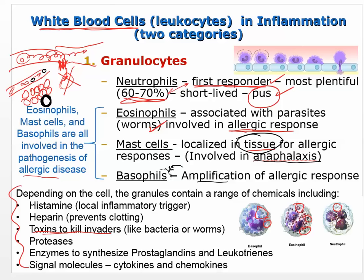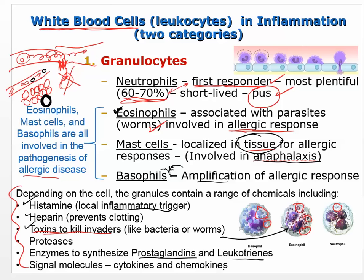You don't need to know what each granule contains specifically. Depending on the cell, the granules contain a range of chemicals including histamine — which binds to histamine receptors and causes a local inflammatory response — heparin which prevents clotting, toxins to kill invaders (eosinophils have toxins that specifically target parasitic worms and will destroy them with those granule toxins), proteases which break down proteins, enzymes to synthesize prostaglandins and leukotrienes, and all of them have cytokines and chemokines, which are basically signal molecules.